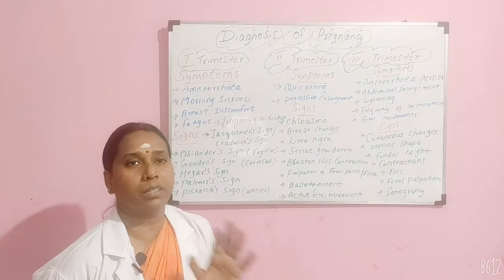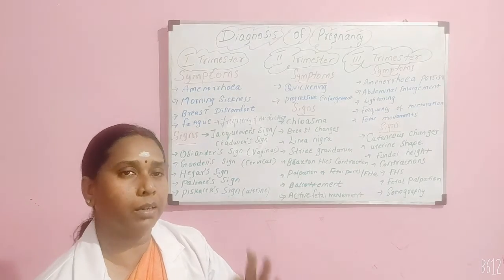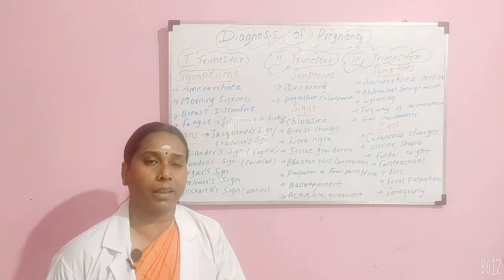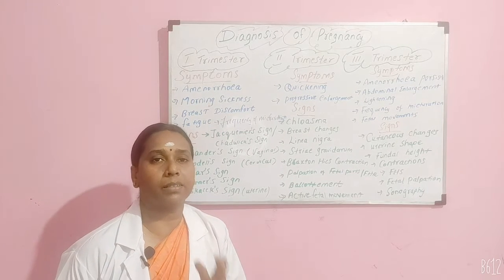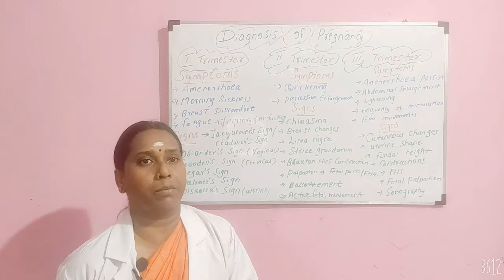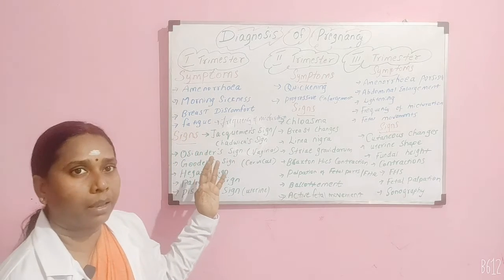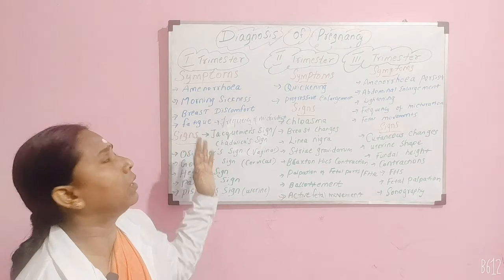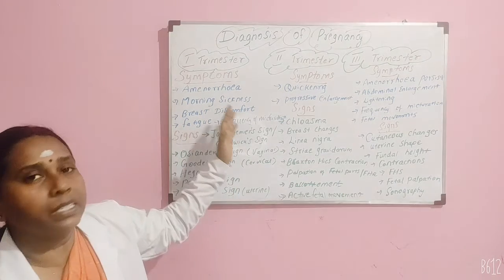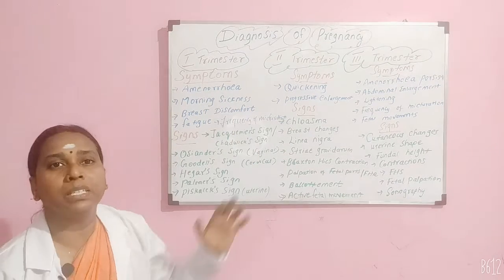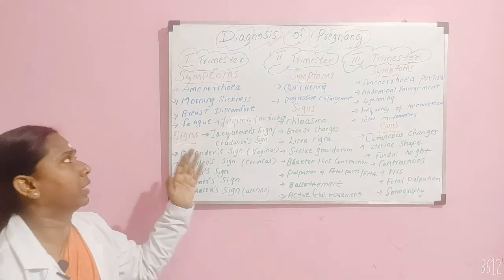A trimester is nothing but three months — you divide the pregnancy into three three-month periods, categorized as three trimesters. The diagnosis begins with the first trimester, second, and third. In the first trimester, we look at the signs and symptoms of pregnancy.